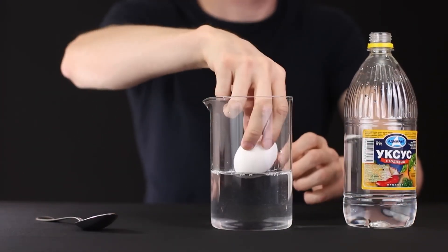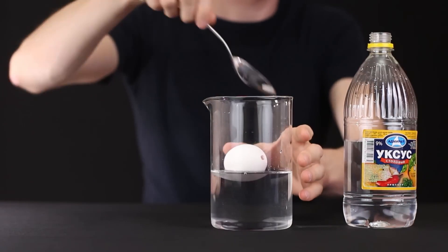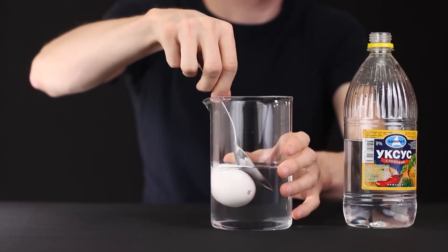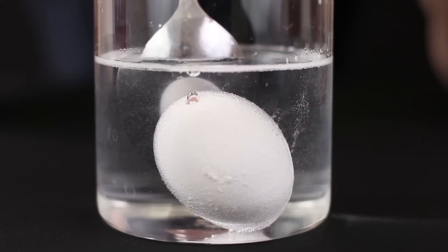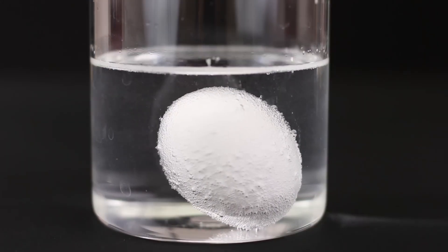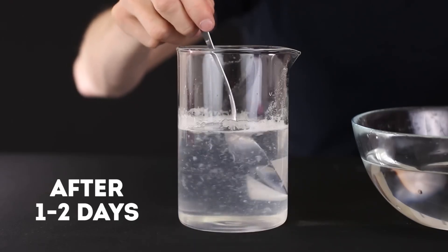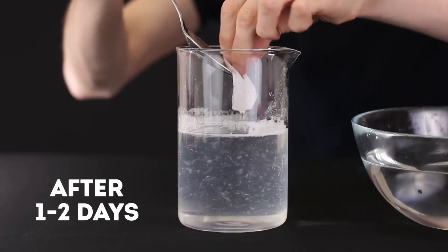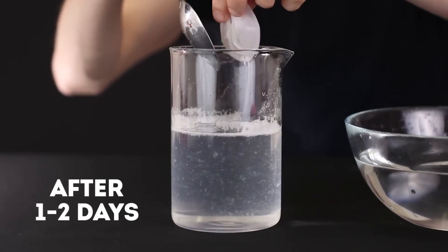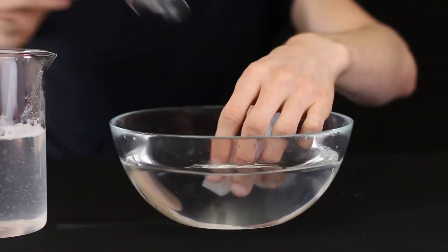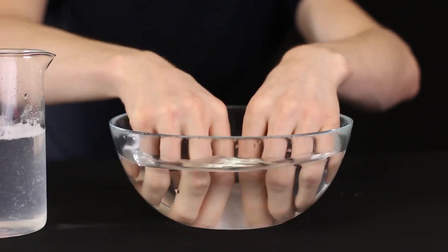Now, put the shell in a glass container filled with vinegar. Under its influence, calcium, which the most part of the shell consists of, dissolves. However, the inner membrane will remain intact. After one or two days, we will remove the membrane from the vinegar. Rinse it thoroughly to get rid of the precipitation.